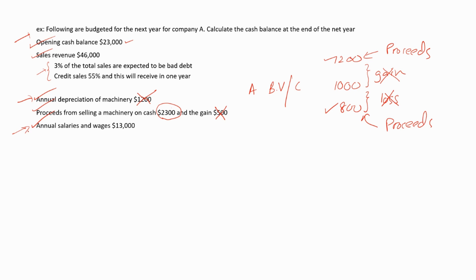Salaries and wages are cash items. Now we can prepare the cash budget. We can start from the opening cash balance, which is $23,000. This is a positive value because this is a reserve of cash. Then there is the sales revenue of $46,000.